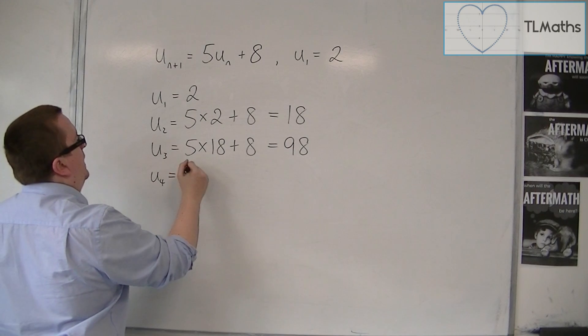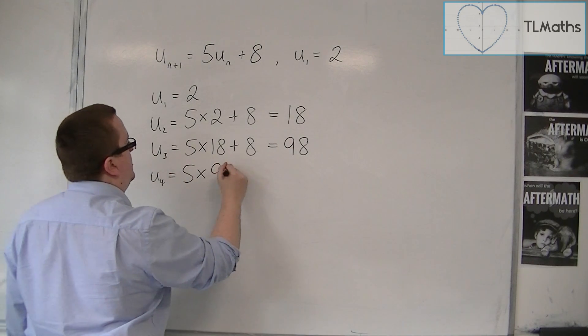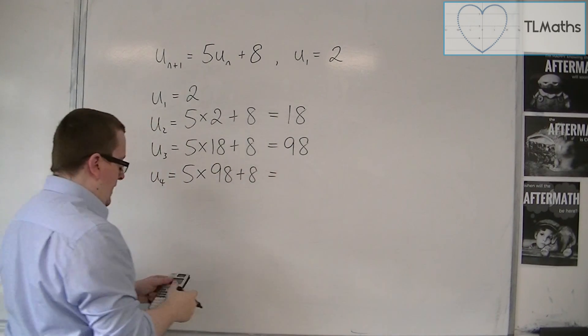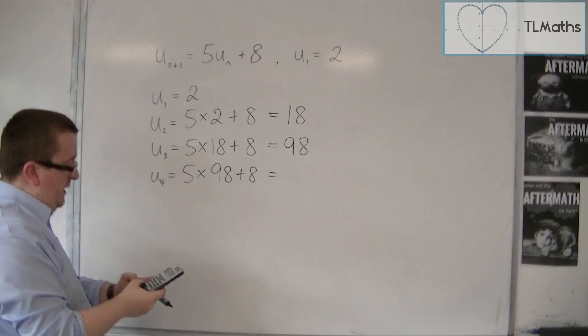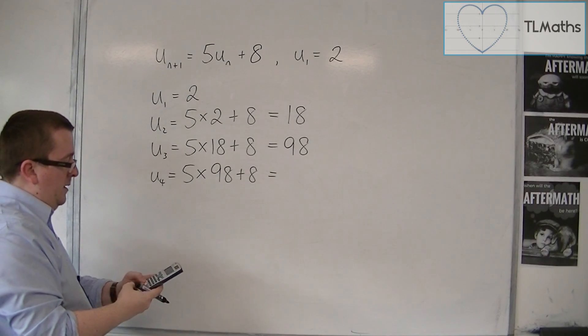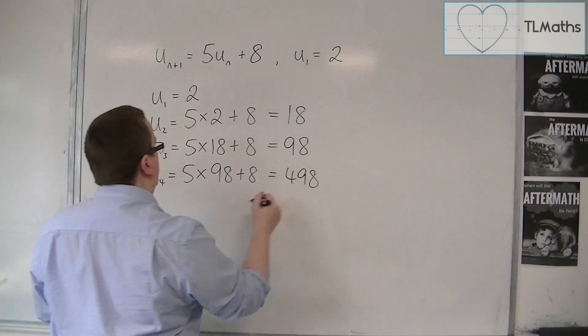u4 is 5 lots of 98 plus 8. You can see that we're just doing 5 times the previous term plus 8 each time, so that's 498.